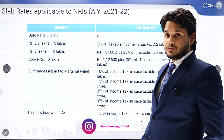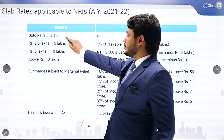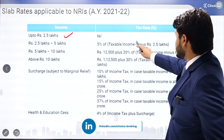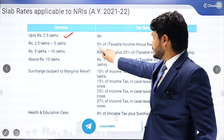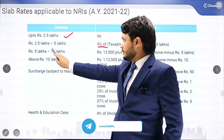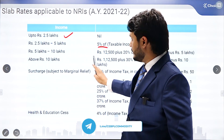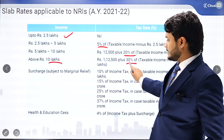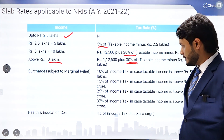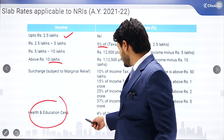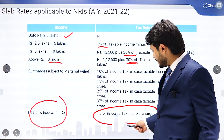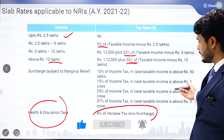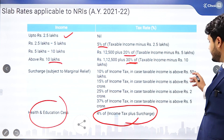These are the slab rates applicable to NRIs for assessment year 2021-22: taxable income up to 2.5 lakh rupees is nil; 2.5 lakh to 5 lakh rupees is taxed at 5 percent; 5 lakh to 10 lakh rupees at 20 percent; above 10 lakh rupees at 30 percent. Health and education cess of 4 percent on income tax is additionally charged. Surcharges apply where income exceeds 50 lakh, 1 crore, 2 crore, and 5 crore rupees respectively.